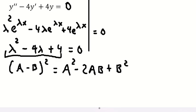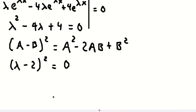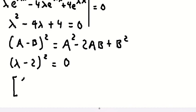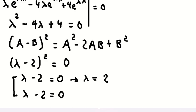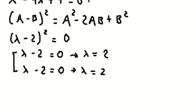This is a perfect square identity, so we need to transform λ² minus 4λ plus 4 into the factored form (λ minus 2)² equals zero. So we have (λ minus 2)(λ minus 2) equals zero.